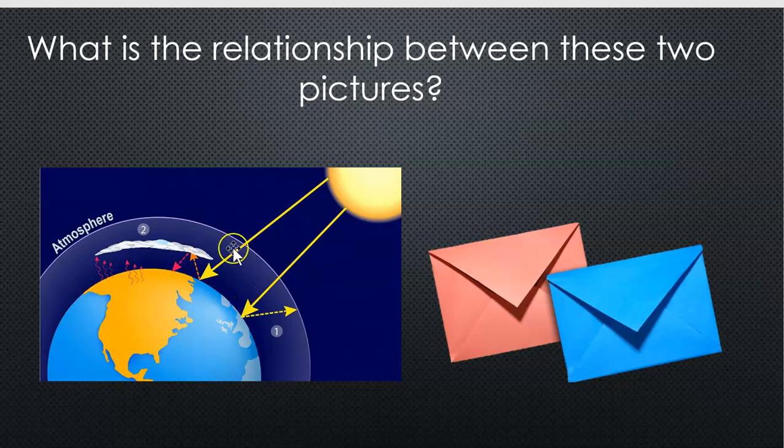Our atmosphere is responsible for trapping things like water and gases and heat that we need to maintain life on Earth. An envelope is responsible for trapping that letter or mail inside so that it stays safe and can get where it needs to go. So I guess I see some parallels between an envelope and our atmosphere.